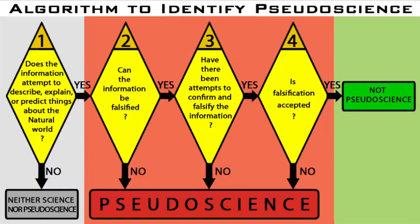The first question one must ask to identify pseudoscience is: does the information attempt to describe, explain, or predict things about the natural world? This question covers the criterion of logical positivism, in that the information must be sensibly perceivable in the natural world.